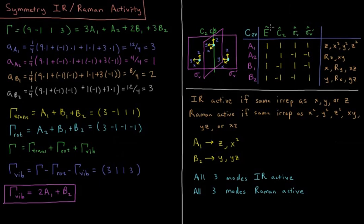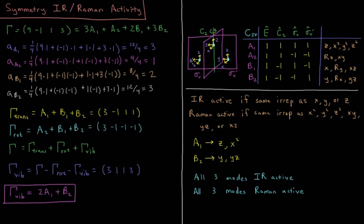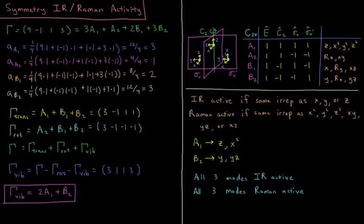Under sigma V, sigma V is this plane which bisects the two atoms here. OZ is going to stay the same, OX stays the same, OY switches sign. It gets reflected through. So that's 1 plus 1 minus 1 or positive 1. All three of these get reflected over here, all three of these get reflected over here. So that's a 0 for all of these. They become a different atomic center. So we get a positive 1 plus 0 plus 0, giving us a character of 1 under sigma V.